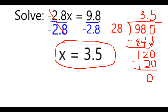So basically to undo the multiplication by negative 2.8, I divide it by negative 2.8. And I just did a little refresher of how you do that with long division, though I'm sure in certain circumstances you'll be using a calculator to do that. Hope that helped.